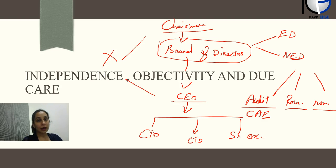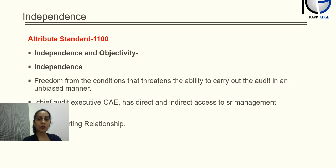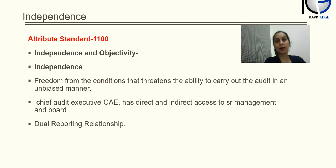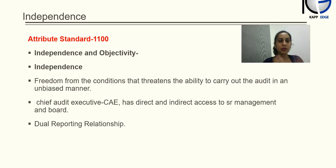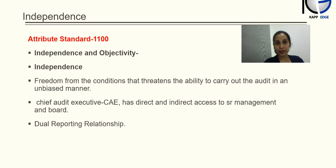Now that we've understood corporate governance, it will be much easier to understand this chapter. For examination purposes, independence and objectivity is a very important topic for CIA exam Part 1. There is no way a question would not be asked from this chapter. When you go through CIA concepts, everything seems similar and easier, but in examination the answer choices are so close that you may not be able to find the correct one. That's where we need to understand the concepts thoroughly before deciding in the examination.